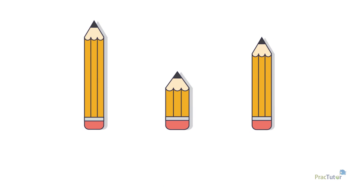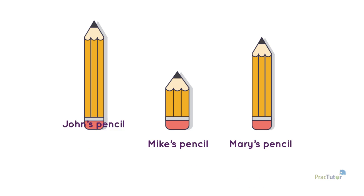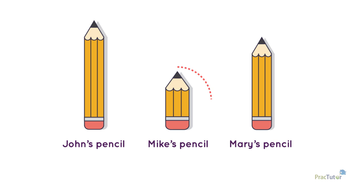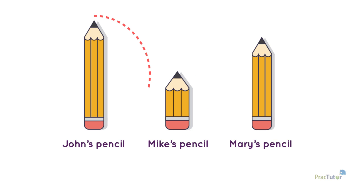You can put objects in order according to length. Let's compare the length of these pencils. Mary, Mike, and John have one pencil each. Mary uses her pencil a lot and needs to sharpen it several times. Mike uses his more times and sharpens it more. And John doesn't sharpen his at all.